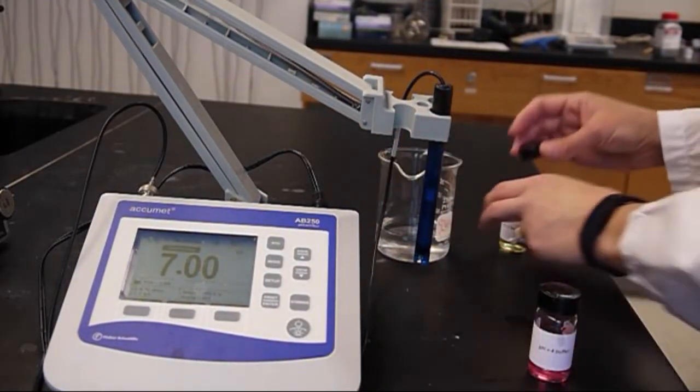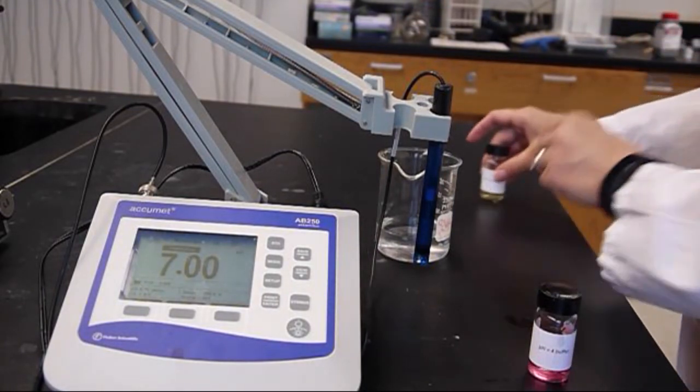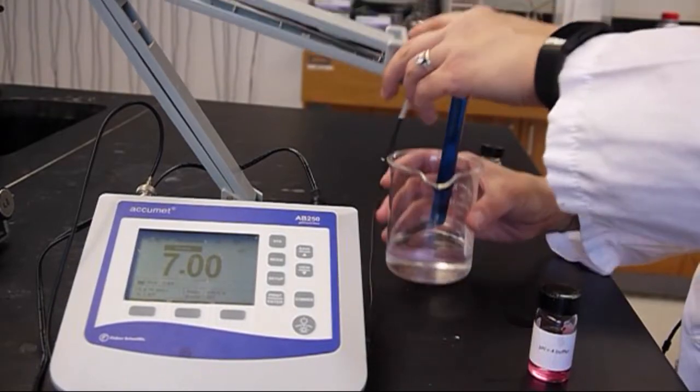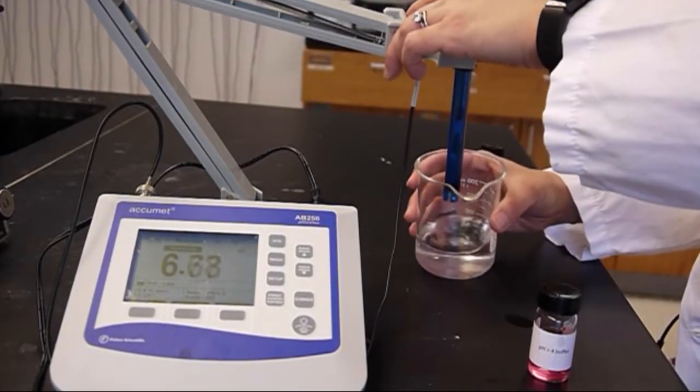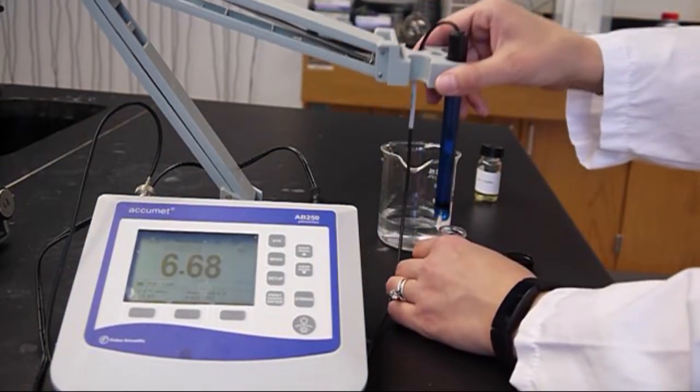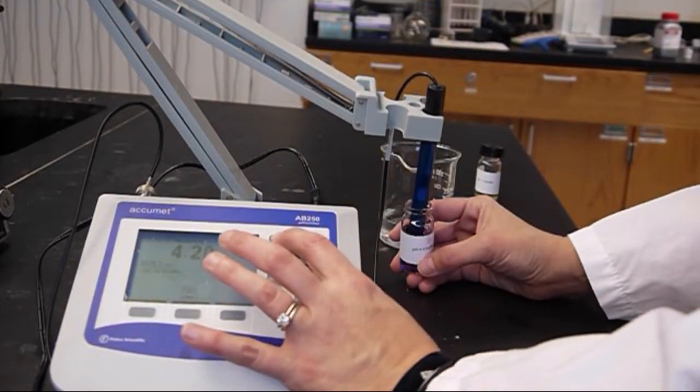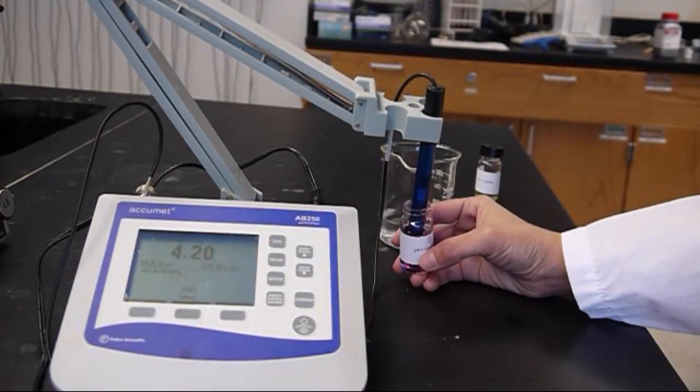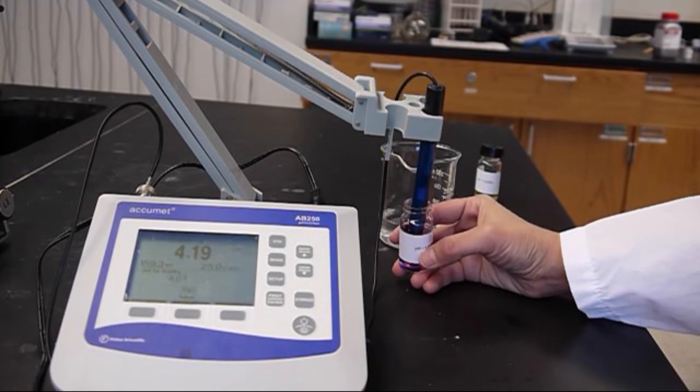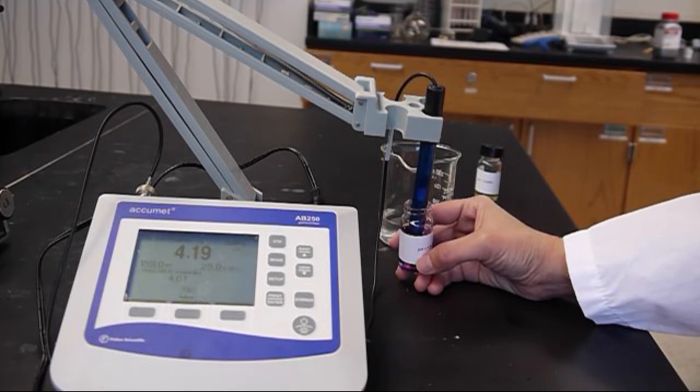Then we will give our electrode a quick rinse in some water, swirl, you can dab it dry with a Kimwipe and then place it in the pH 4 buffer and again press the standard button. So the pH meter should recognize that the pH is around 4 and then we'll know that this is a pH 4 standard or pH 4 buffer for the standardization process.